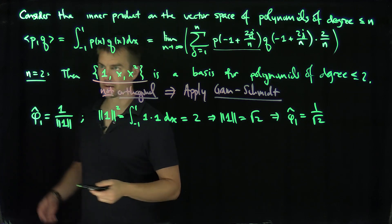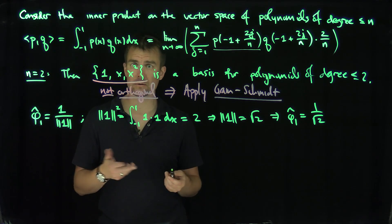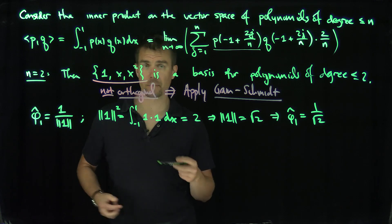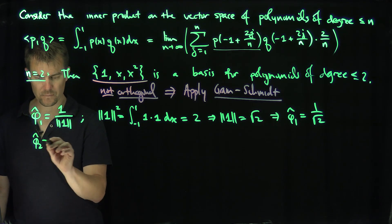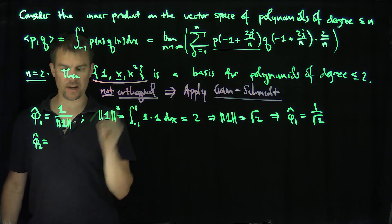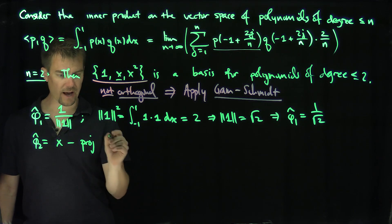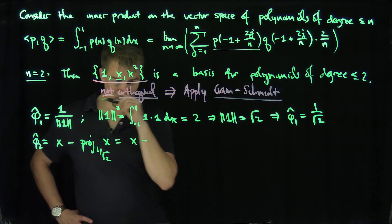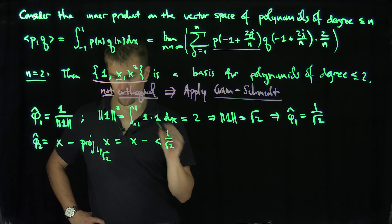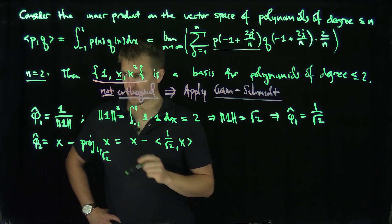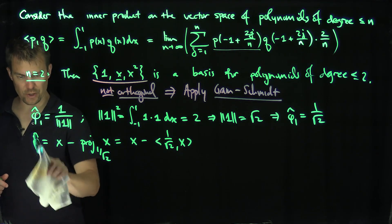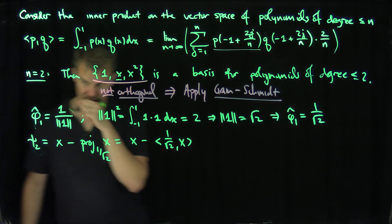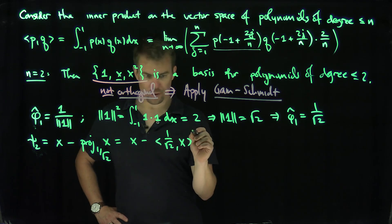Typically, when talking about the orthogonalization process for this family of functions, we want to get a family called the Legendre polynomials. Legendre polynomials are normalized differently, so Gram-Schmidt gives functions that are multiples of the Legendre polynomials. Now, ψ₂ is going to be x minus the projection of x onto the subspace spanned by 1/√2. That's x minus (1/√2) times the integral from −1 to 1 of (1/√2)·x dx. Since x is an odd function, this integral cancels out.